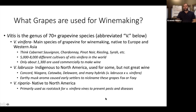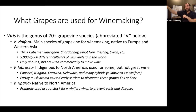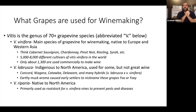Before getting into the yearly cycle, let's talk about what types of grapes we're discussing. The main genus is Vitis, with over 70 different grapevine species. The main one is Vitis vinifera, native to Europe and Western Asia — think Georgia, Armenia, the Caucasus region, the Middle East, and through Europe. This includes Chardonnay, Cabernet Sauvignon, Merlot, and Syrah. There are almost 8,000 different cultivars within this one species, but only about 1,300 are used commercially to make wine — which is something to explore in our next session on varietals.